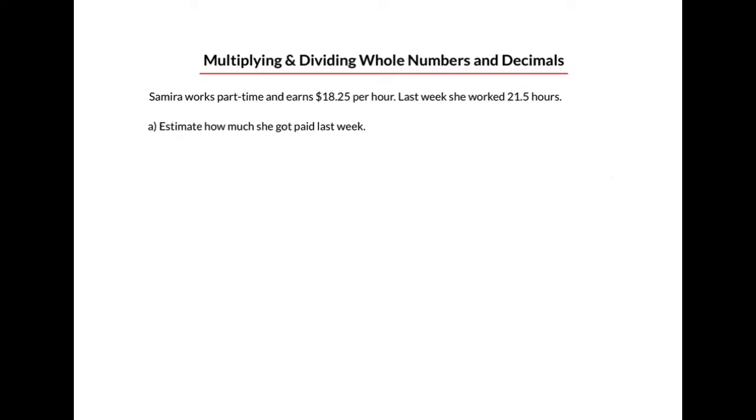So let's pull out the numbers from the question. If she got paid $18.25 per hour, that means that she got paid $18.25 per, per means to divide, per one hour. And we know she worked 21 and a half hours, so let's put that number down. So we have to decide what do we do to these two numbers in order to calculate or estimate the amount she got paid. Well, we might notice that the units, when the numbers are written this way, cancel each other out. And therefore, we need to multiply these numbers to get the answer.